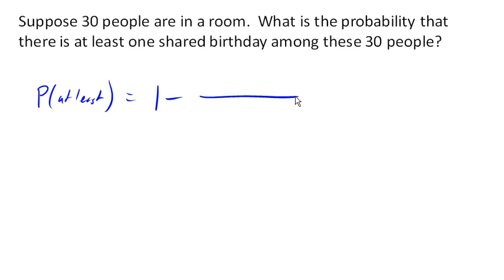No shared birthdays mean, from 365 possible birthdays, how many ways could we pick 30 different birthdays out of 365? How many different ways could there be 30 birthdays including repeats, right? And that's the same idea as our numerator and denominator there.